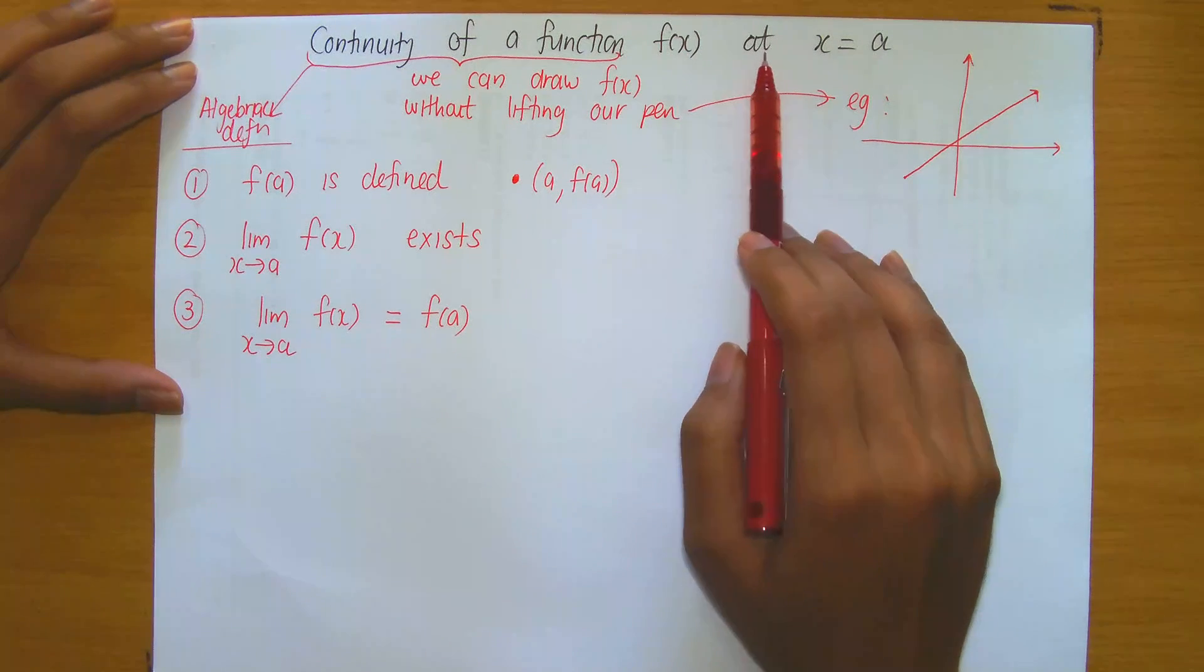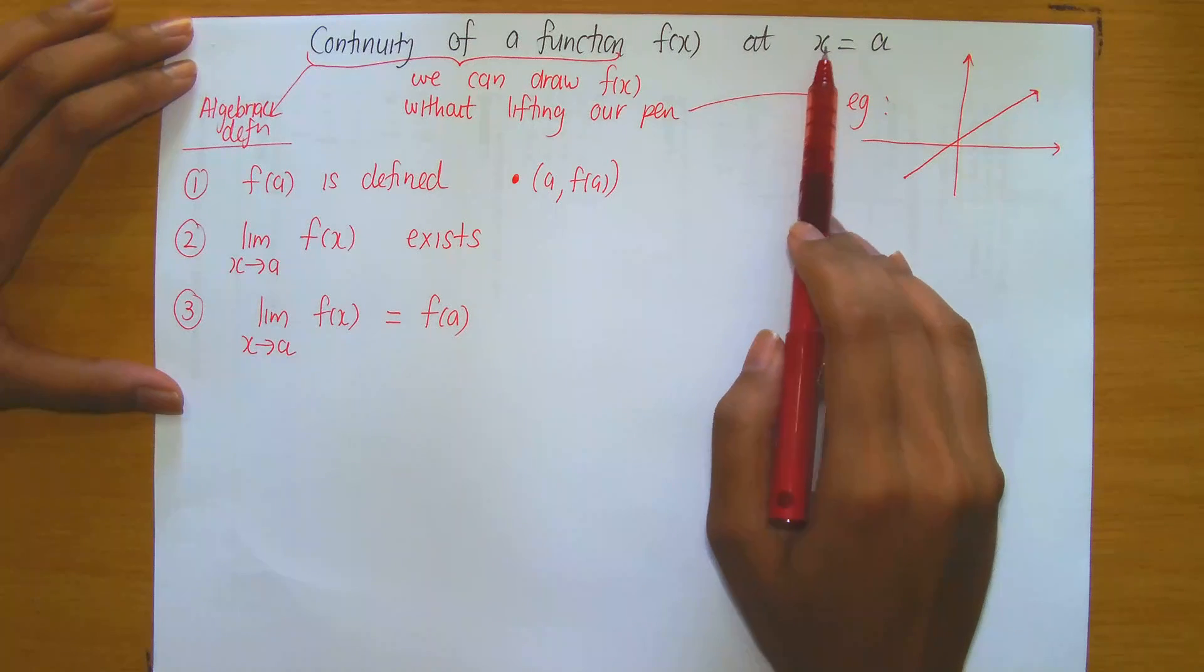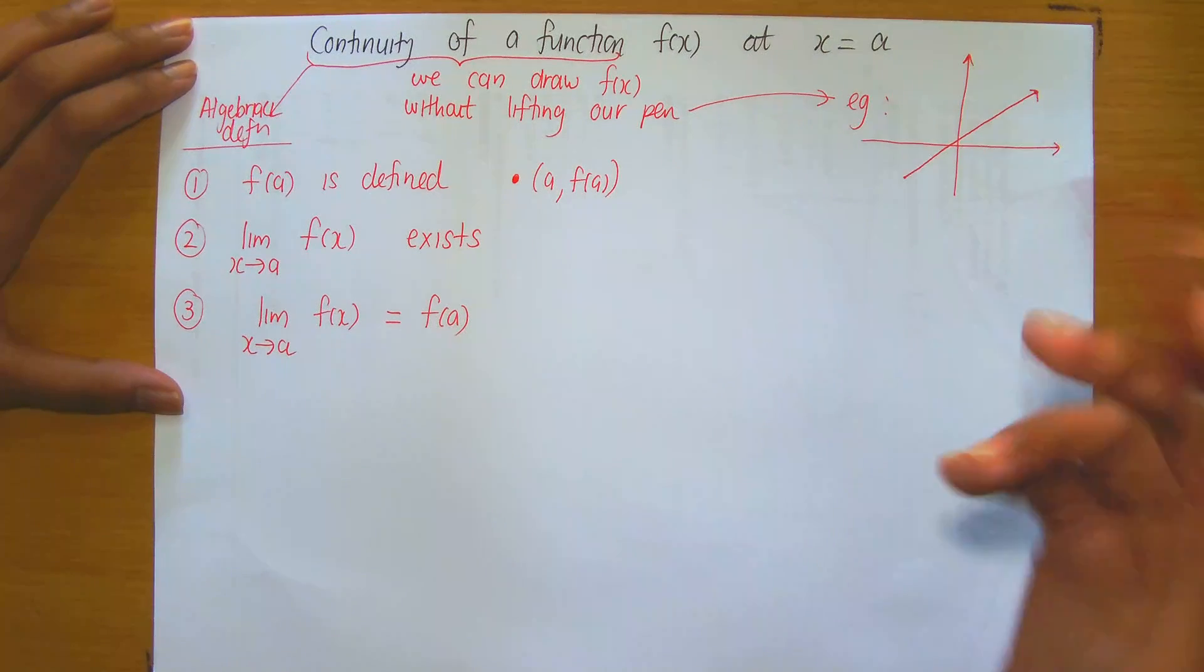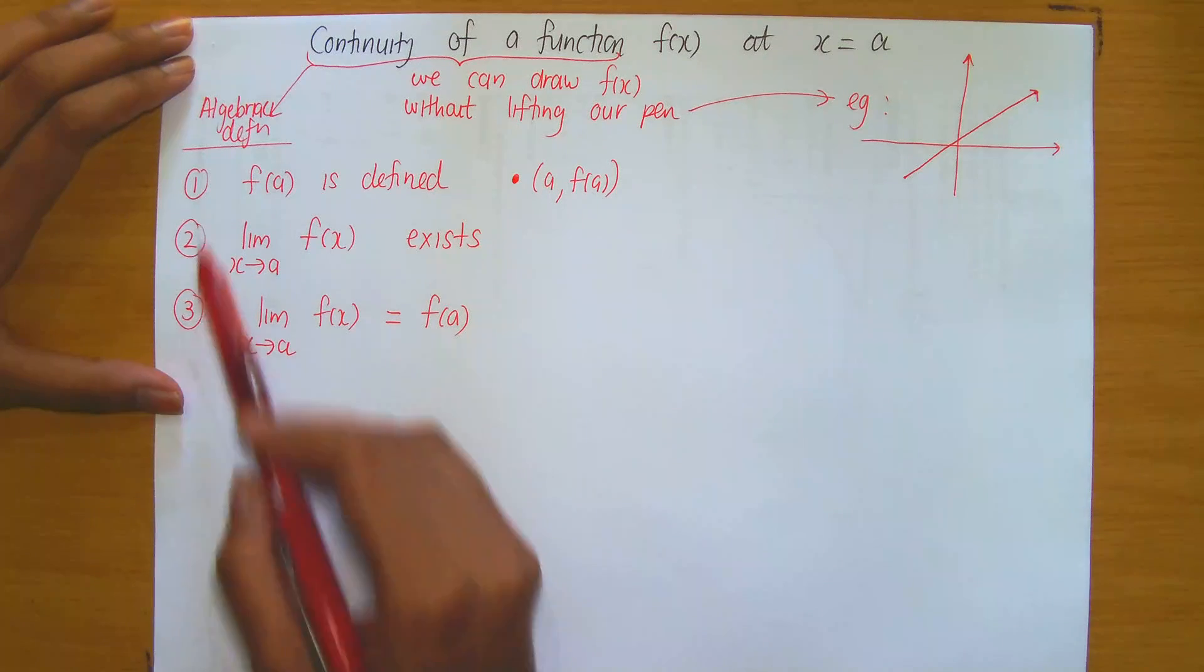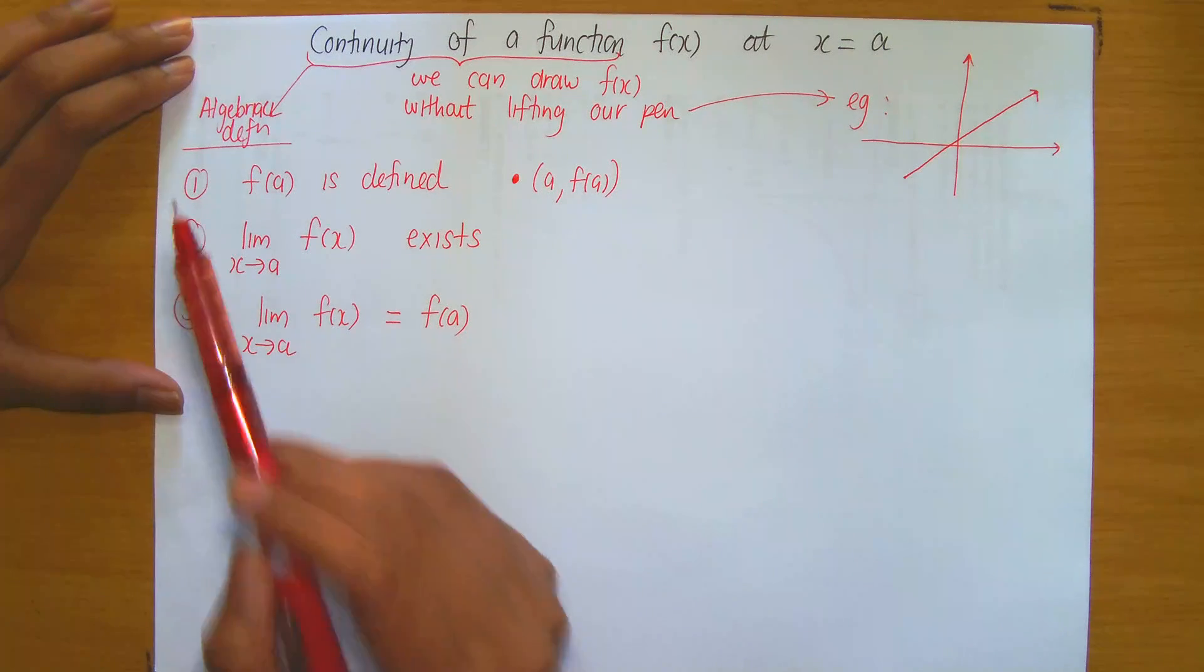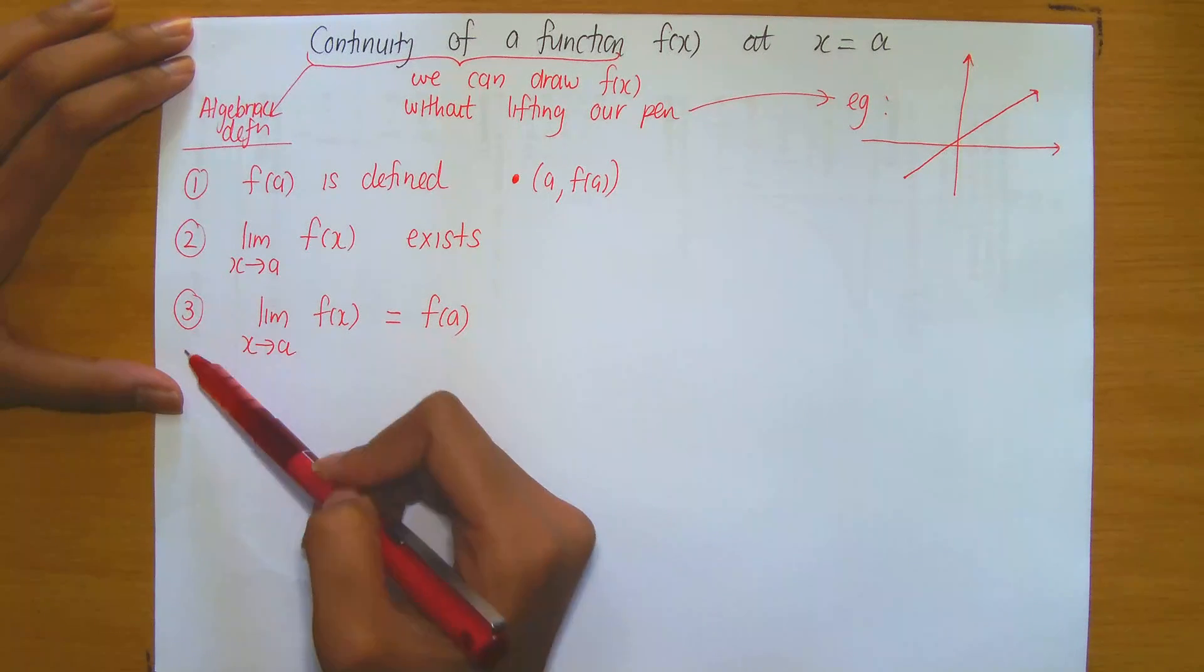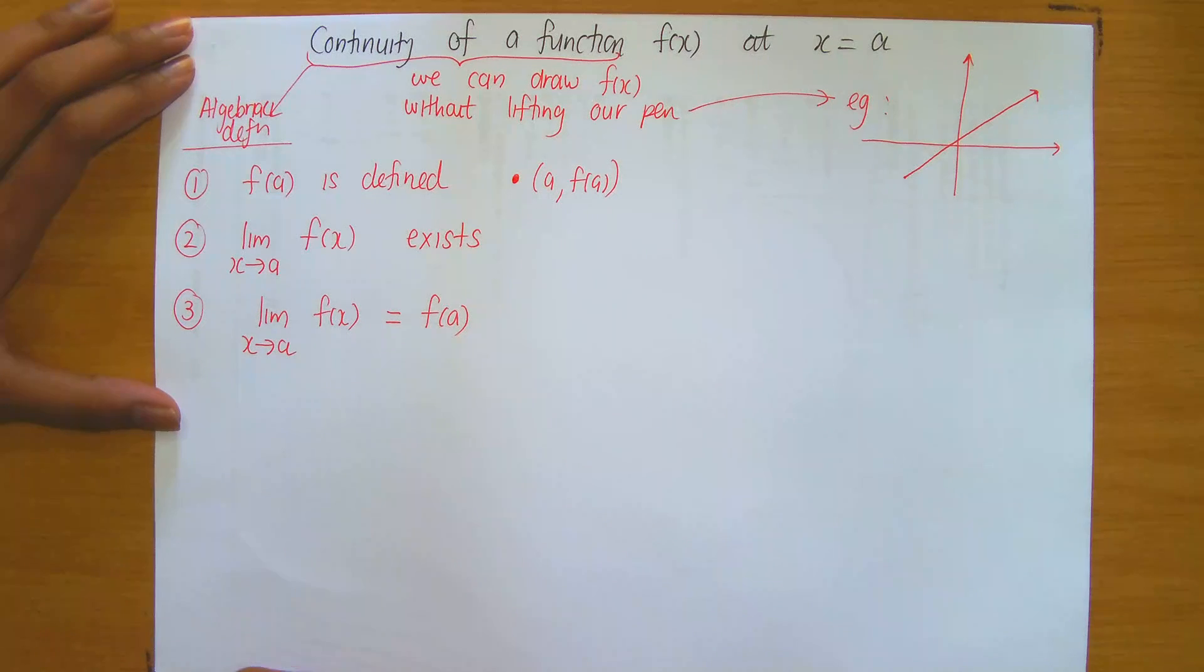In order for a function f(x) to be continuous at the point x equals a, we're talking about continuity at a point only, all three definitions, all three steps and conditions that I've stated here, one, two and three, must be satisfied.